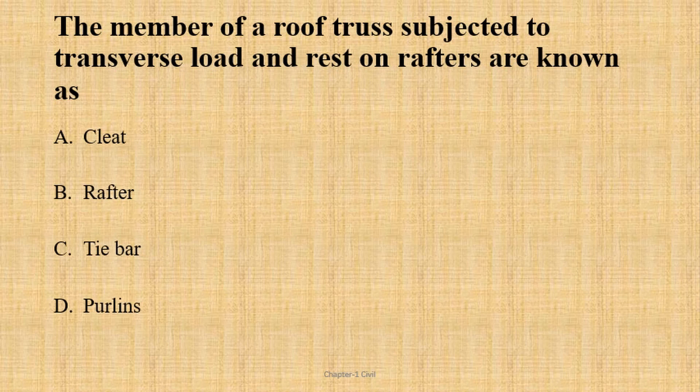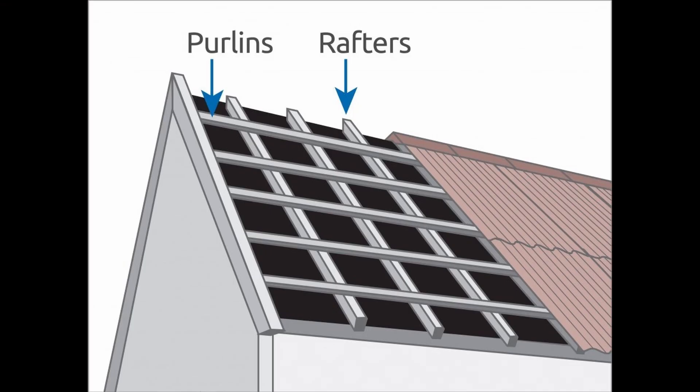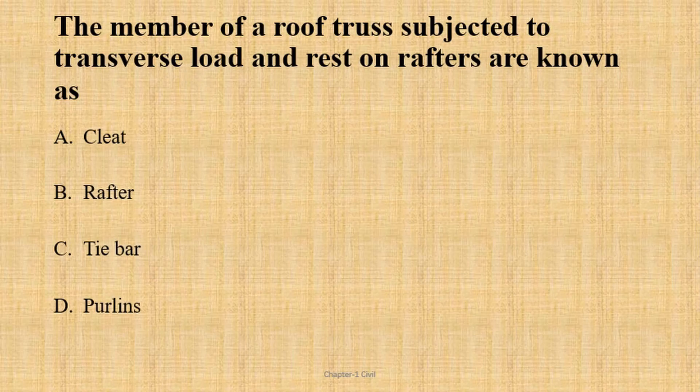The members of a roof truss subjected to transverse load and resting on rafters are known as purlins. Rafters support purlins. Purlins support the roof covering. The answer is purlins.